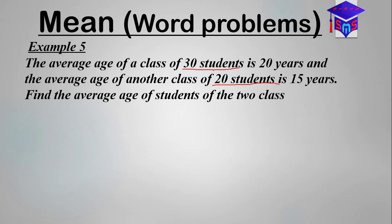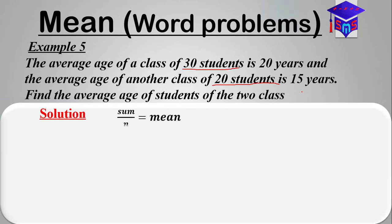We are finding the average age of the 50 students combined. To do that, we have to find the sum of the ages of all 50 students divided by 50. We need to find the sum of the ages of the 30 students and also the sum of the ages of the 20 students, then add them together. Our basic formula is: sum divided by n equals the mean.